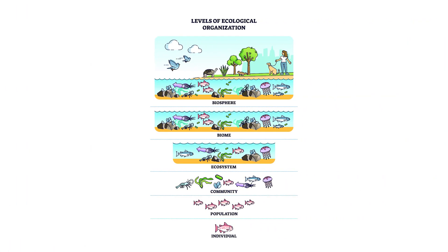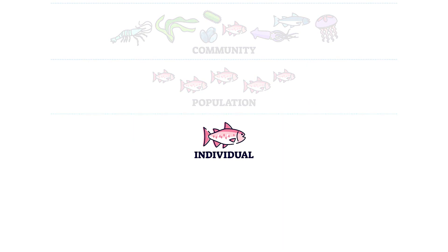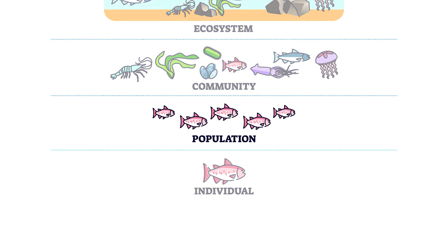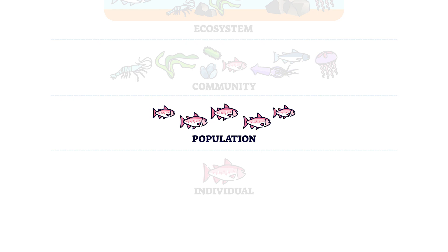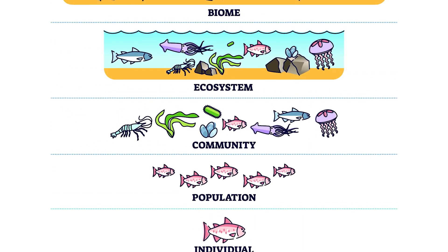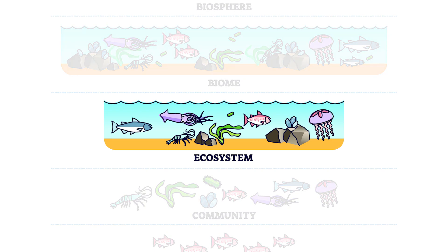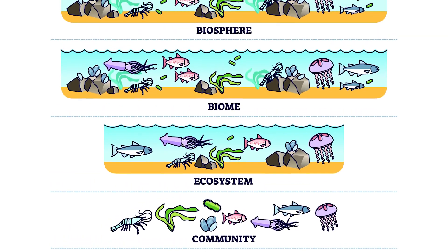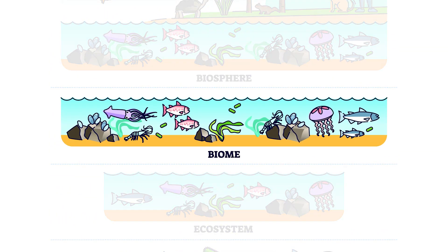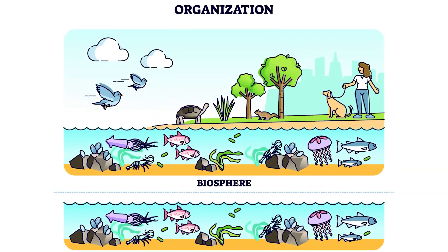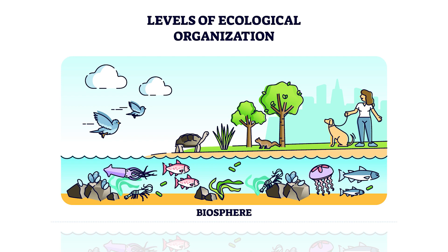The biosphere is often broken down and studied by its levels of complexity. The simplest level is the individual — a single organism. When a group of organisms of the same species come together in the same geographic area, you have a population. A group of populations that interact with each other make up a community. And when all of the communities come together along with the abiotic factors in a particular area, you form an ecosystem. Together, all of the ecosystems on Earth with similar physical characteristics and climate form biomes. And finally, all of the biomes on Earth come together to form the biosphere.